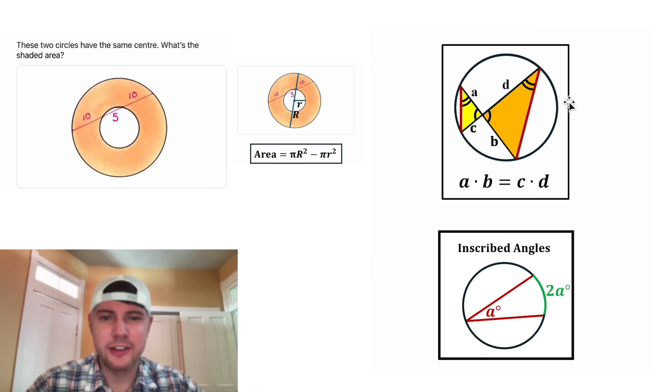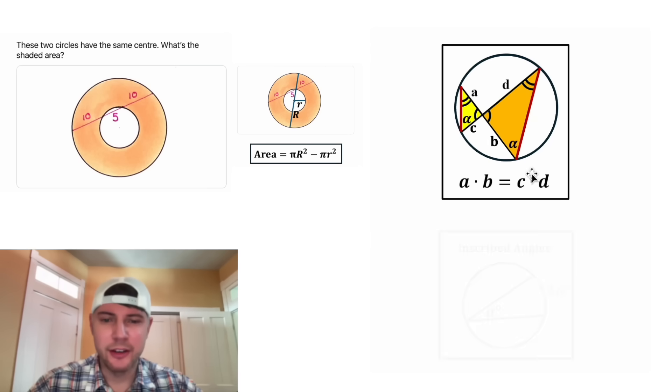And then for this angle, let's call it α. We can do the same thing for it. This arc will be 2α degrees, and then we can pivot over to this inscribed angle. Since this is 2α, this is α. So now these two angles are congruent. So in these two triangles we have three pairs of congruent angles, that means they are similar triangles. Let's copy them down here.